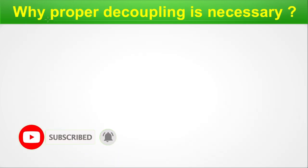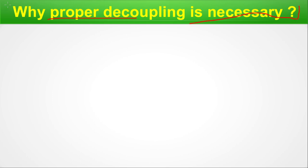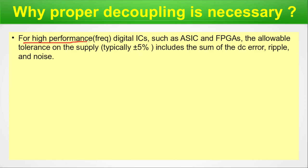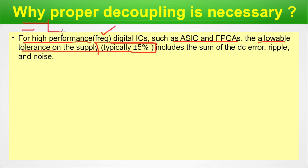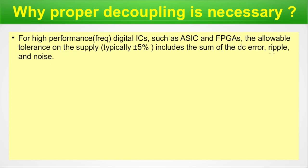Why is proper decoupling necessary in a circuit? Here we are talking about a silicon chip, but let us understand from a circuit perspective. For high-performance, high-frequency digital ICs such as ASICs and FPGAs, the allowable tolerance for the supply is typically 5%. That means the VDD and VSS change should remain within 5% only. This includes the sum of DC error, ripple, and noise.